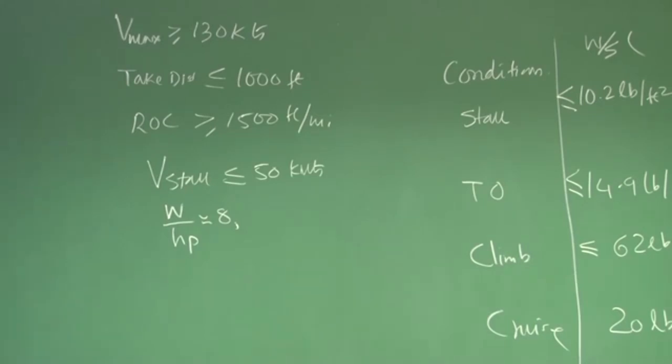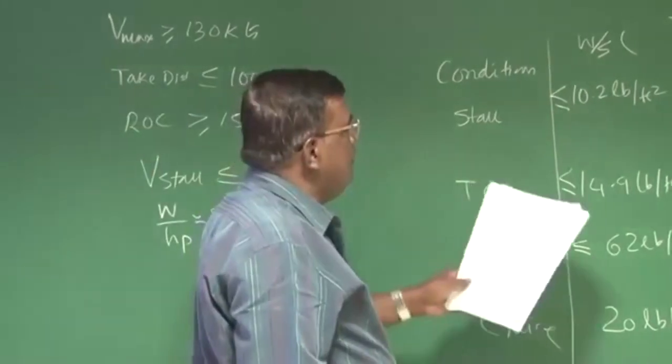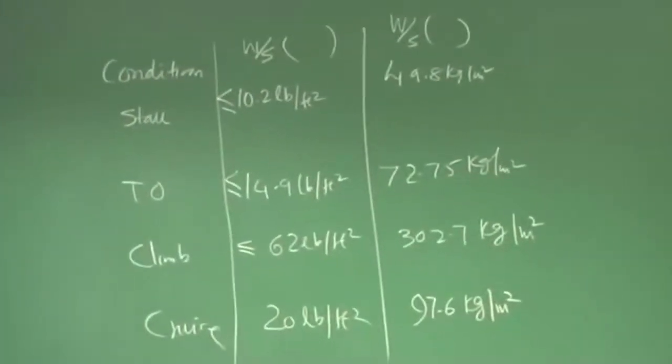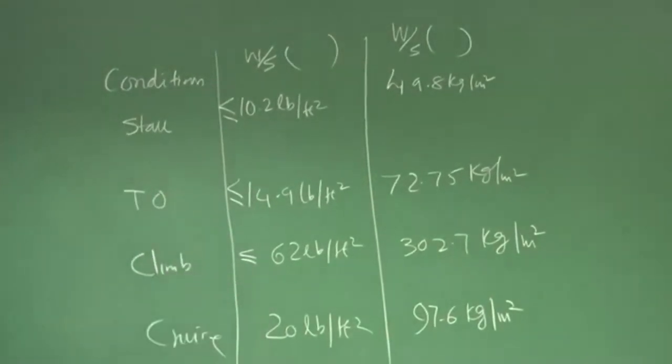Climb minimum 1500 feet per minute, and when you are doing a cruise, we are taking around 130 knots cruising speed. V max could be more than that. Now, if this is the condition, different values of wing loading we are having, which one I should pick?